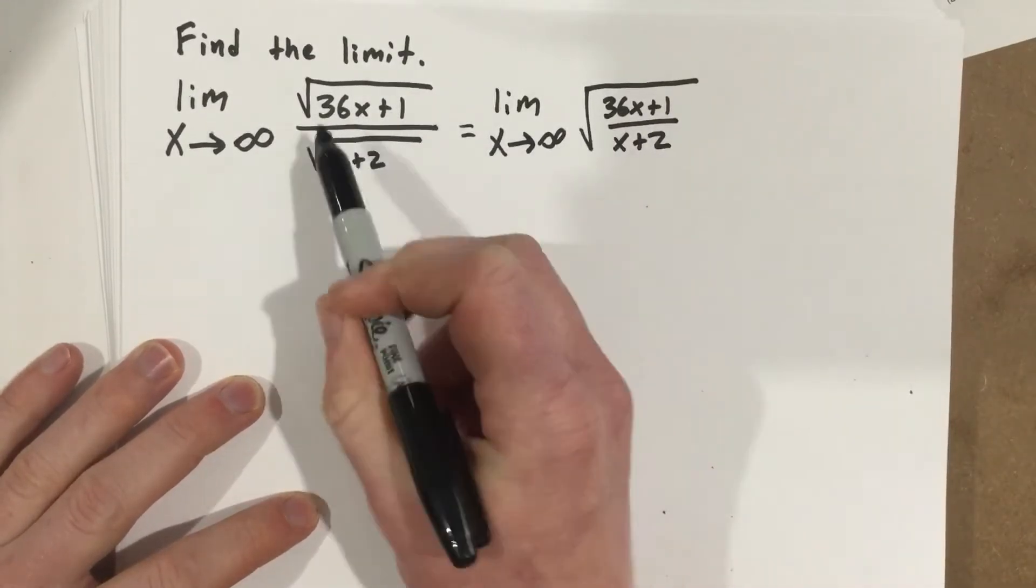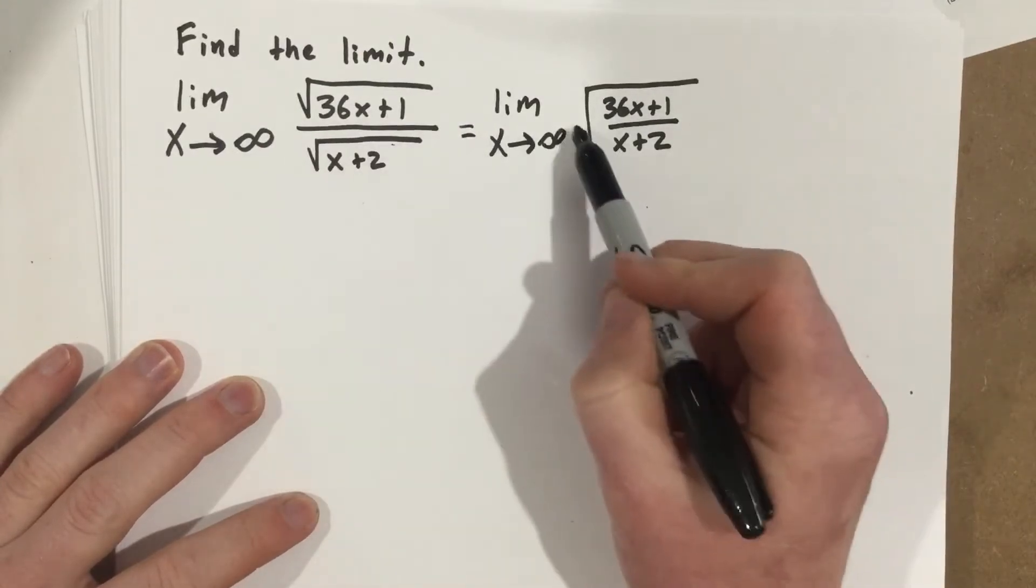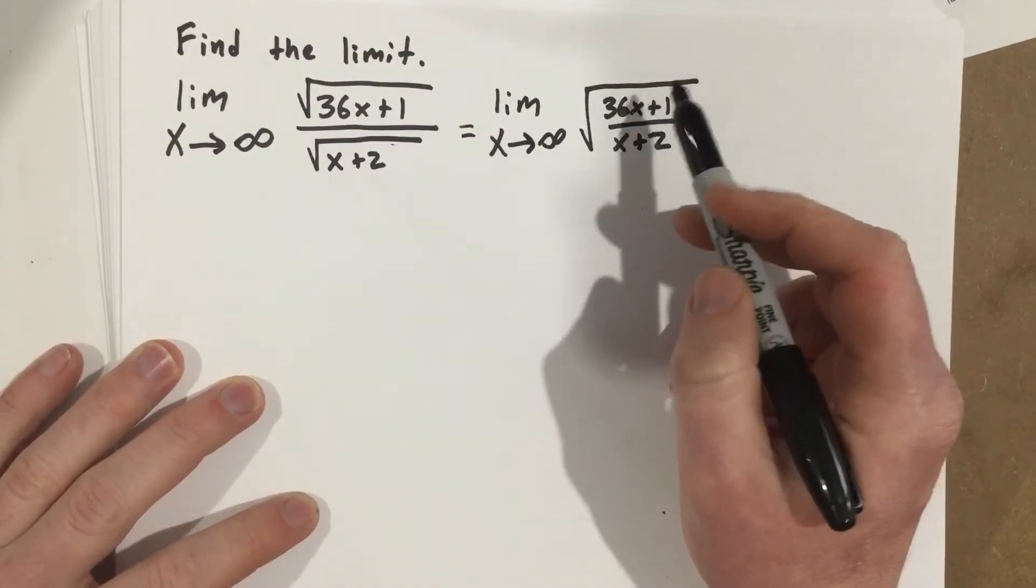We can do this because if we're doing the root of the top and the root of the bottom, that's just the root of the whole thing. That's just exponent rules.